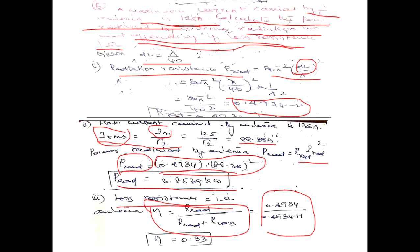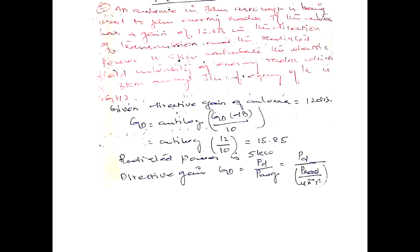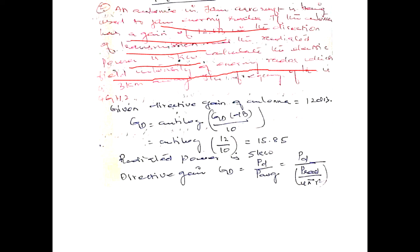Substituting both values gives the efficiency equal to 0.33. The next problem: an airborne jammer antenna is being used to jam an enemy's radar. The antenna gain is 12 dB in the direction of transmission and the radiated power is 5 kilowatt. Calculate the electric field intensity at the enemy radar, which is 3 kilometers away, with a transmission frequency of 4 GHz.